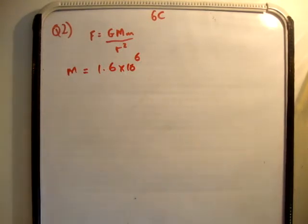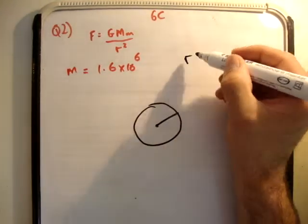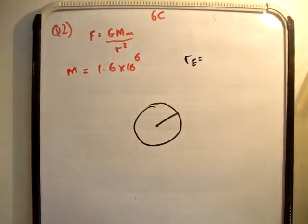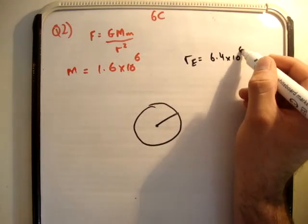So that's kind of a silly question. So here's the Earth. The radius of the Earth, I'm going to say Re, and we're given that the radius of the Earth is 6.4 times 10 to the 6 meters.